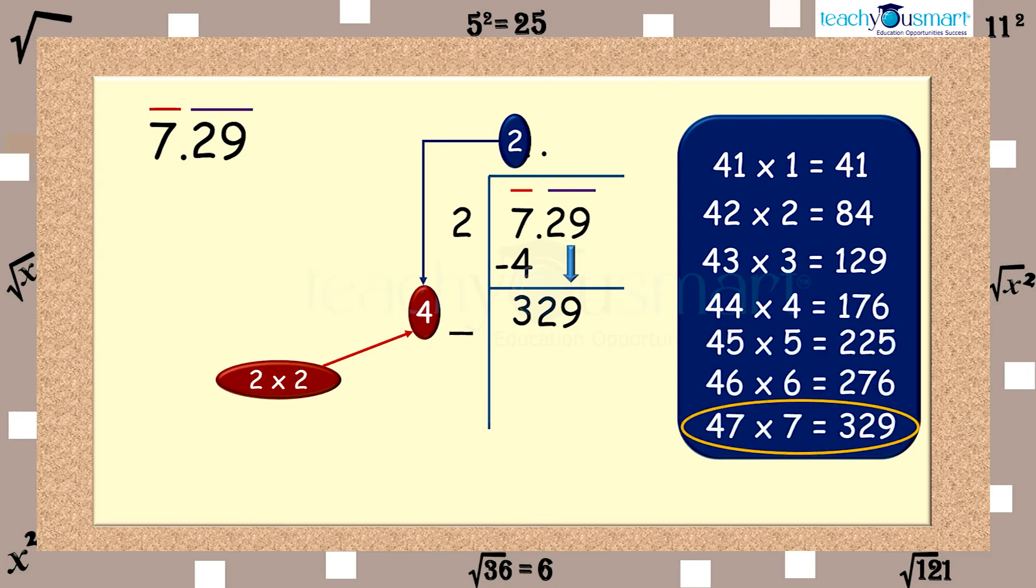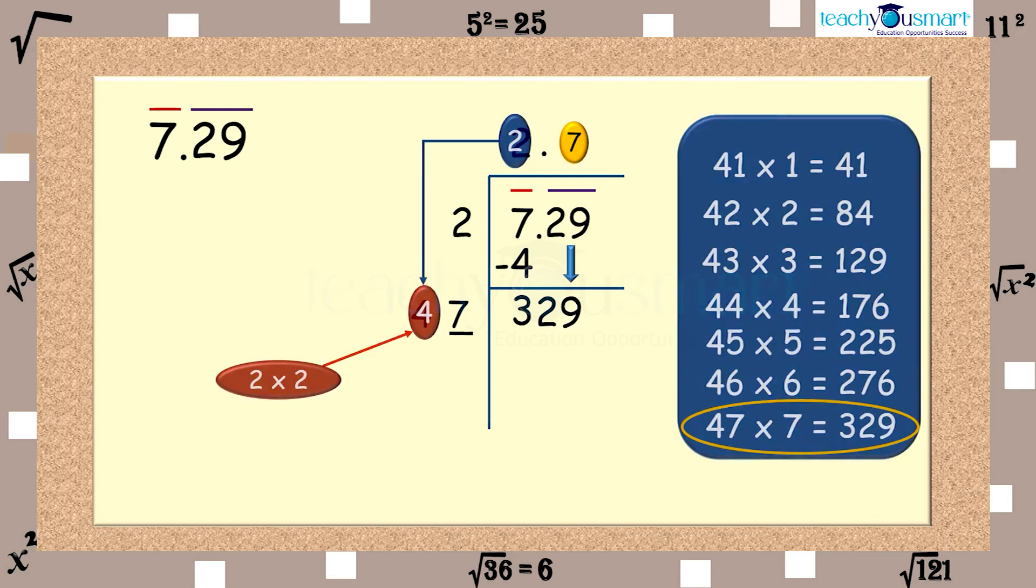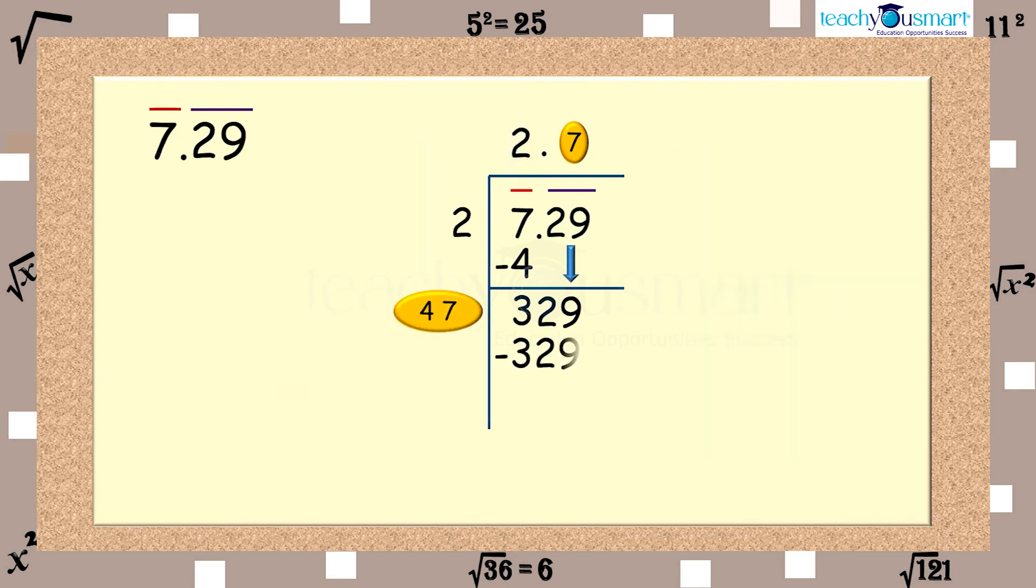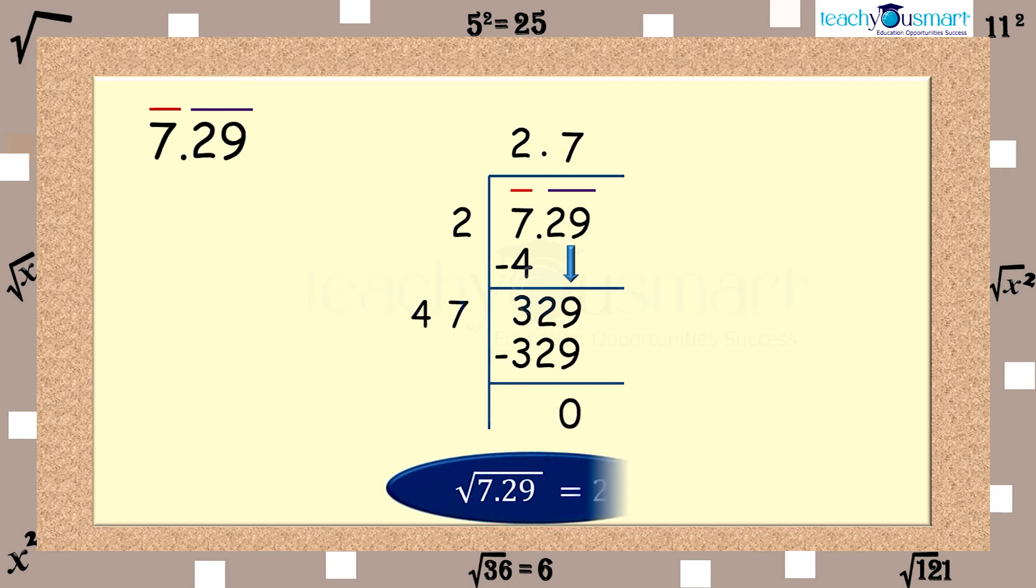Here, we consider 47 multiplied by 7 equals 329. Thus, we get the square root of 7.29 equals 2.7.